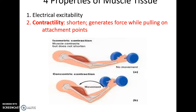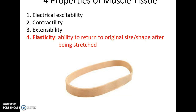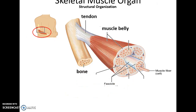Contractility: muscles are able to shorten — that is what they do, the only thing they do — and it generates a force that will pull on attachment points or move substances in some other way. Extensibility: they are able to stretch without being damaged. And elasticity: they can return to their original size and shape after being stretched.